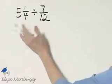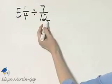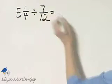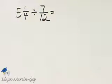Let's divide these two numbers. This is a mixed number and a fraction. So let's take a moment and write our mixed number as an equivalent improper fraction.